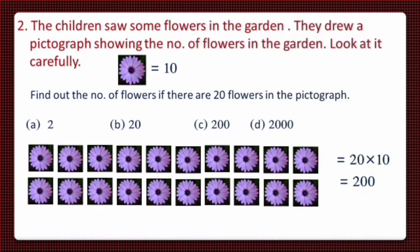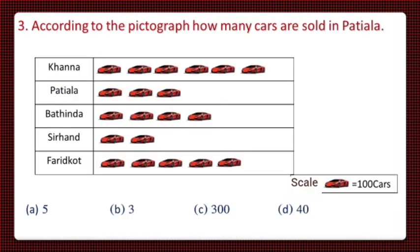Now, find out the correct option. Yes, option C, 200 is the correct option. And we will tick mark it. This is the third question, kids. According to the pictograph, how many cars were sold in Patiala?